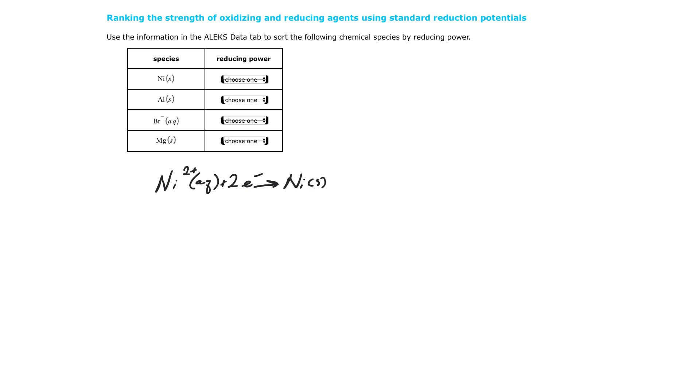And I saw that that was at 0.257 volts. Second thing I saw was aluminum 3 plus aqueous, plus 3 electrons, yields Al solid, and it was negative 1.676 volts.